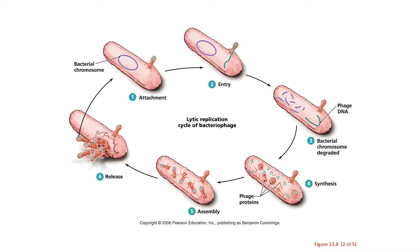Step two: entry. Our T4 bacteriophage wants to use the host cell machinery to make progeny viruses. To do that, it needs to get its DNA inside of the host cell. An enzyme called lysozyme is released, and it begins to eat away at the E. coli cell envelope, and T4 injects its DNA into E. coli strain B.